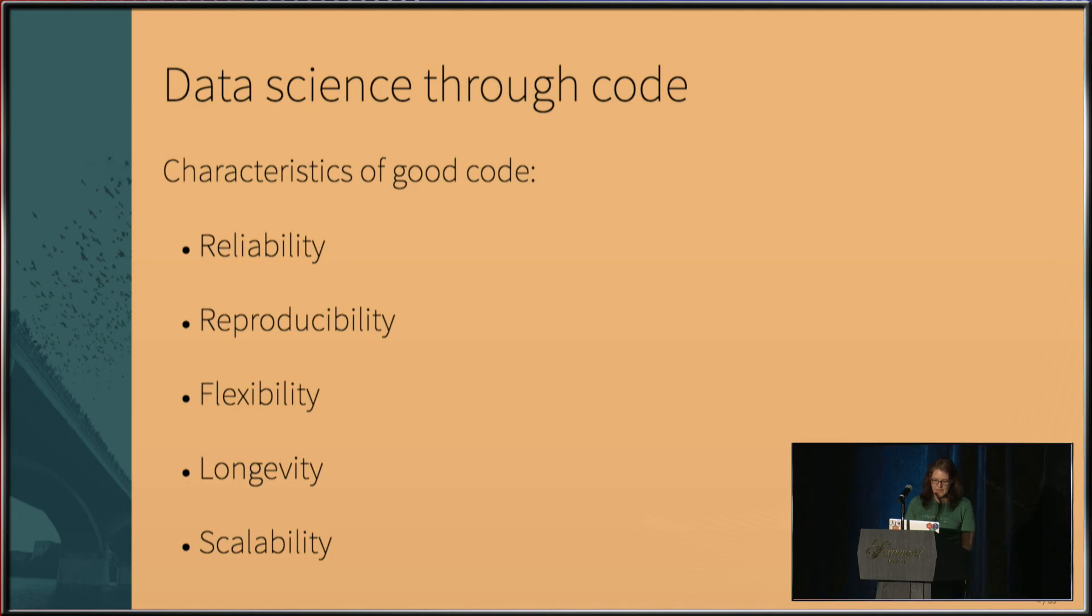So since the code behind our analysis or prediction is important, we should know what we want out of it. Ideally, we want reliability, the ability to depend on our code producing the correct results. And we want confidence that our functions won't break when new data comes in or that one area of the code won't break if you make a change to another area of the code.